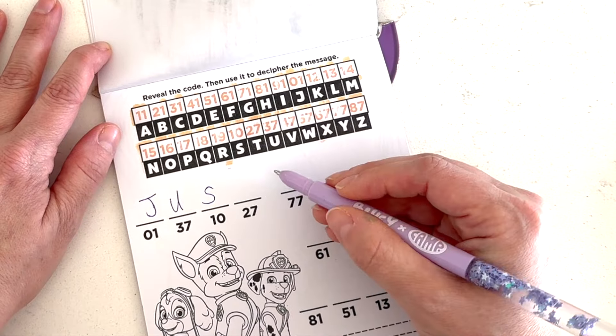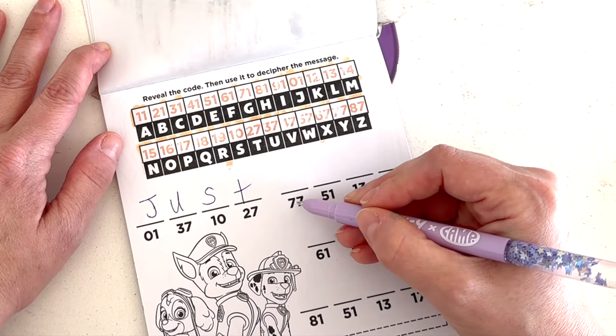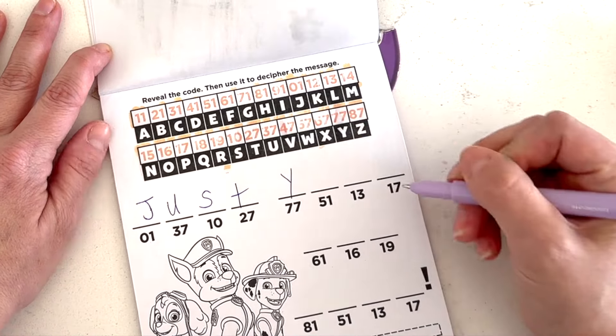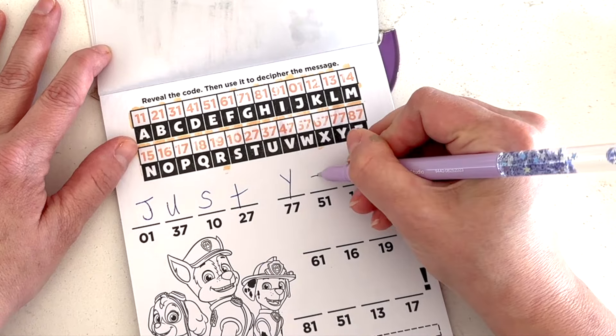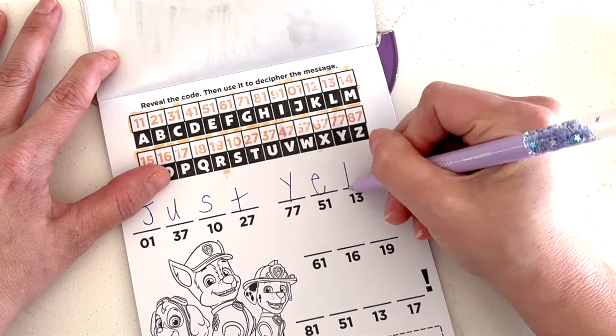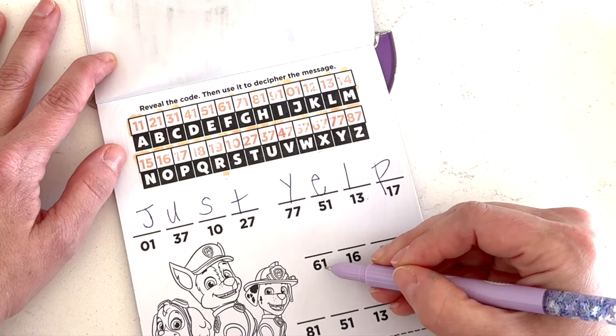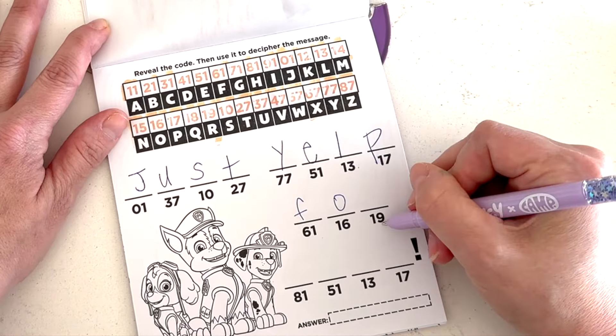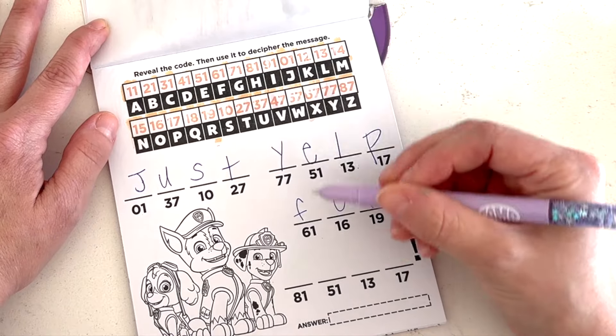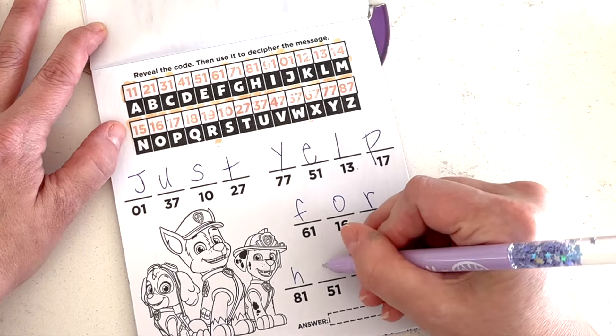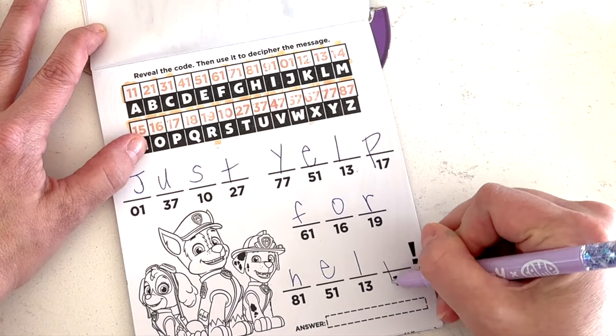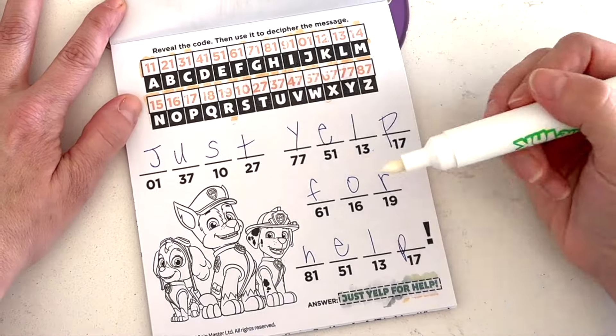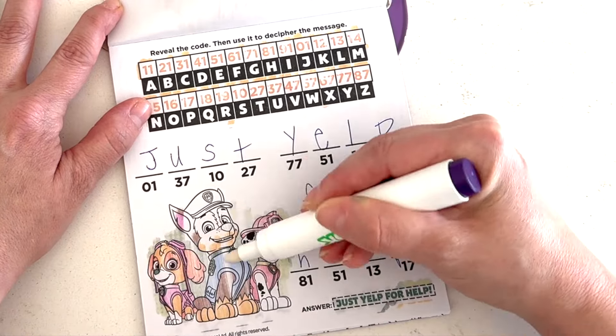Okay. One. What number is O-1? That's J-37. U-10. Do you see a 10? S-27. T-77. Hmm. Do you see the 77? Oops. This one needs to be in a little bit more. All right. There's a 77. Just Y. 51. Hmm. Y-E. 13 would be L. 17 would be P.